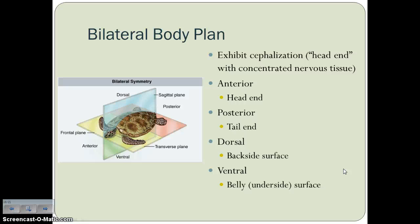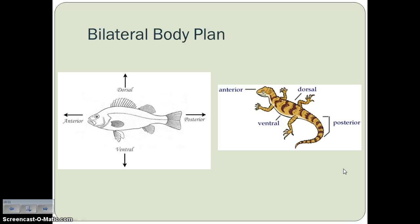The way to remember dorsal versus ventral: think of the dorsal fin — that's the scary fin on a shark. If you see a dorsal fin, you better run for your life! The dorsal fin is found on the backside surface. See if you can label your dolphin picture at number 11 on your notes organizer, and use your notes on symmetry to identify the animals in number 10 as asymmetrical, having radial symmetry, or having bilateral symmetry.